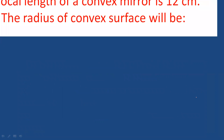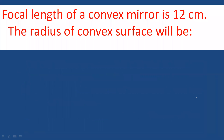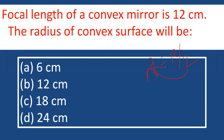The focal length of a convex mirror is 12 cm. What is the radius of curvature? Using the relation f = R/2, the radius of curvature R = 2f = 2 × 12 = 24 cm. The correct option is D.